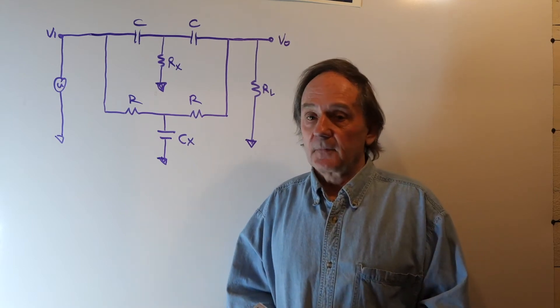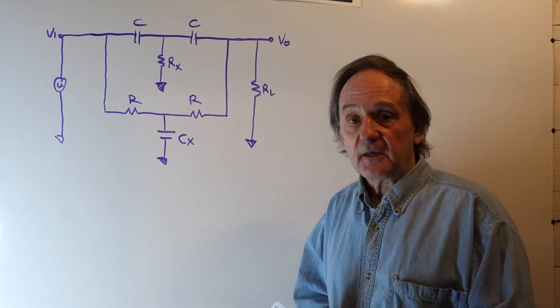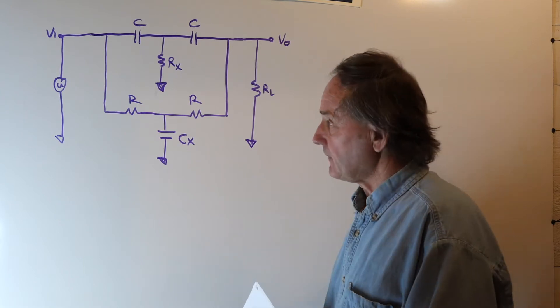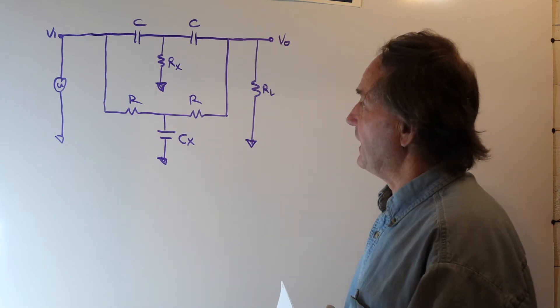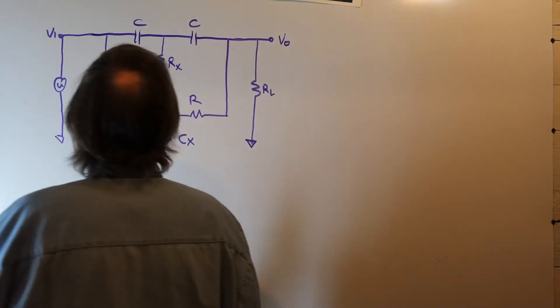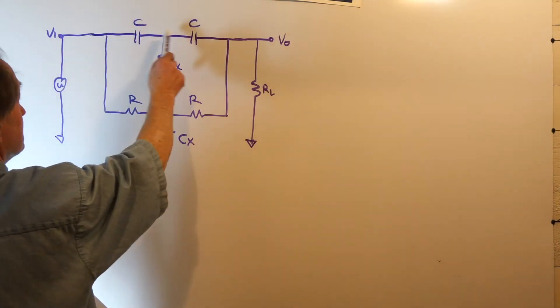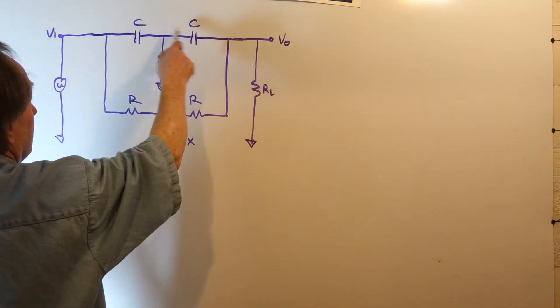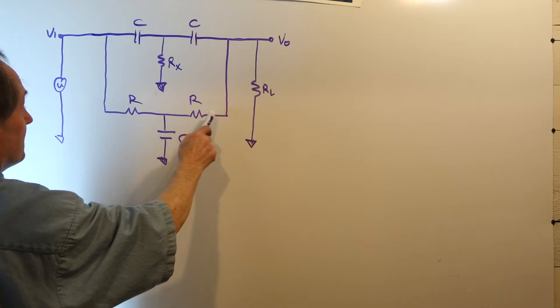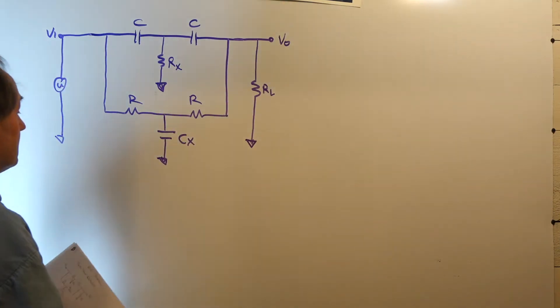This problem involves what's called a twin T network. It's a passive RC network where we have two T's. We have a T here bridged by another T here, hence the name twin T.